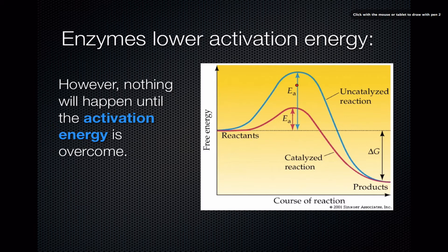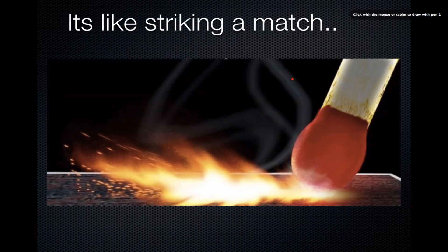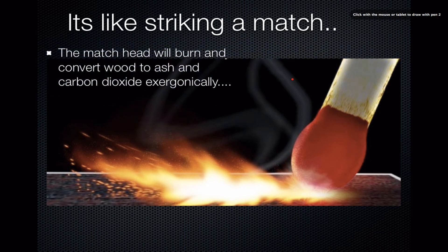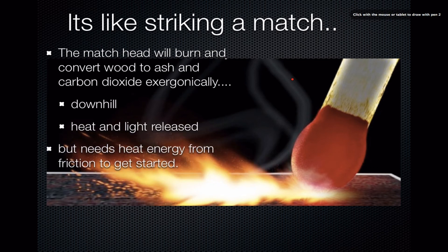Without an enzyme the reactants have to be energized up to this amount of energy before they can fall down to the products — and this is a pretty big jump, a lot of energy that needs to be added to the system. This energy has to come from somewhere; there's no such thing as a free lunch. You can think of the function of an enzyme as analogous to striking a match. A match can sit on a table and not burst into flame for decades, but if you rub it hard enough on a rough surface you add enough energy to heat those chemicals high enough to start burning, converting the match into ash, carbon dioxide, and light. It's a downhill reaction that releases heat and light, but it needs friction to get started.